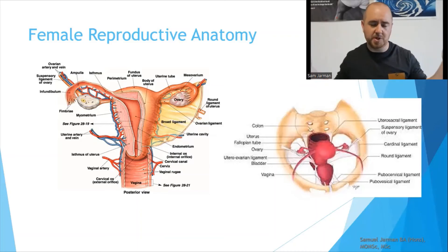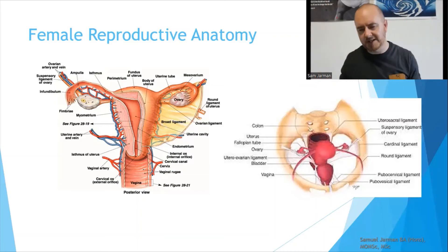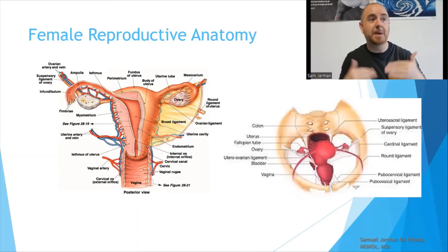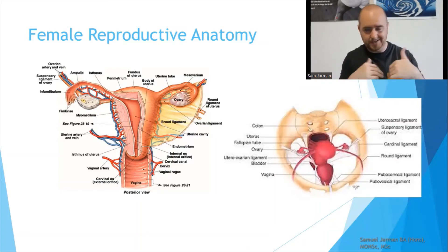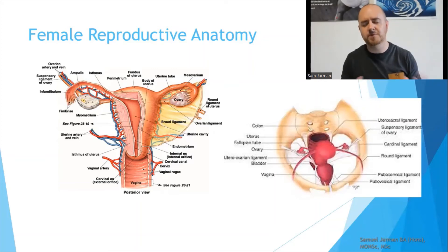You have the fallopian tubes, which allow transit of eggs from the ovaries to the uterus should fertilization occur. At the bottom of the uterus you have the cervix, and then the vagina, which is essentially the pathway between the external world and the opening at the cervix — then into or out of the uterus, depending on what you're speaking about.